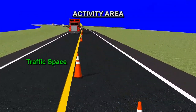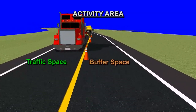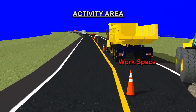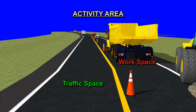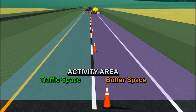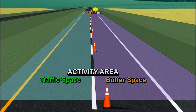The activity area includes the traffic space, the buffer space, and the work space. The traffic space is the portion of the highway in which road users are routed through the activity area. The buffer space is the open or unoccupied space between the transition area and the work space. It provides a margin of safety for both traffic and workers by providing some recovery space for an errant vehicle. The length of the buffer space is measured from the end of the transition area and is based on the stopping sight distance for the speed being considered.